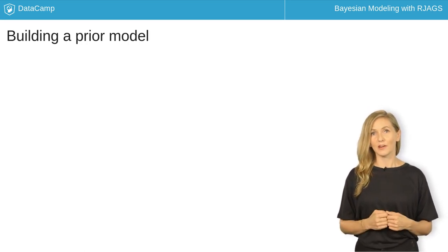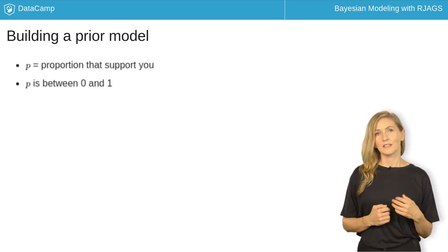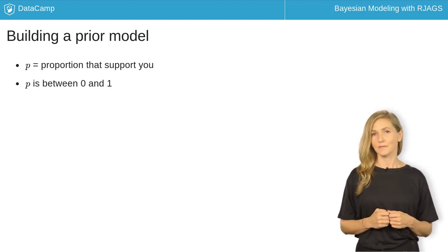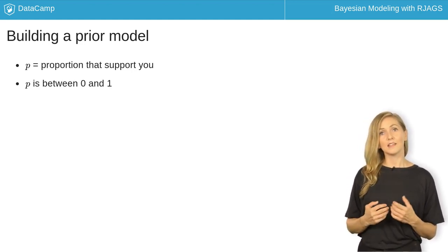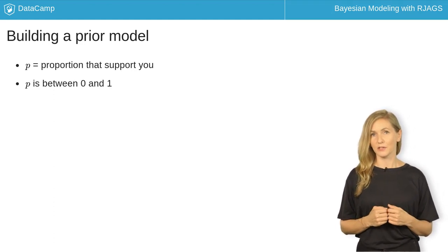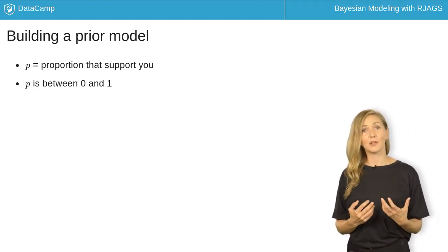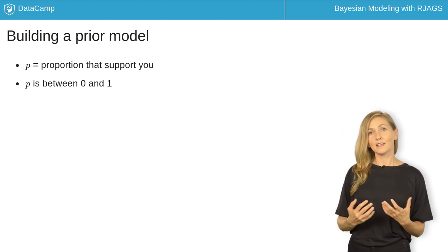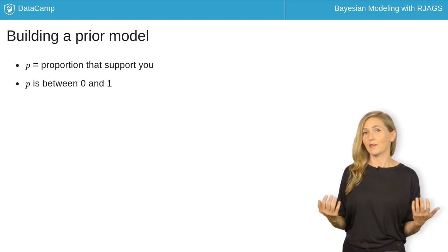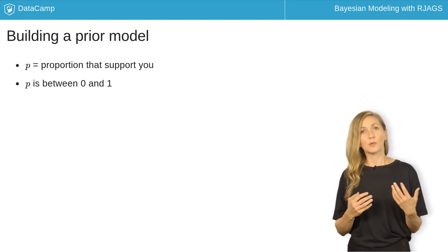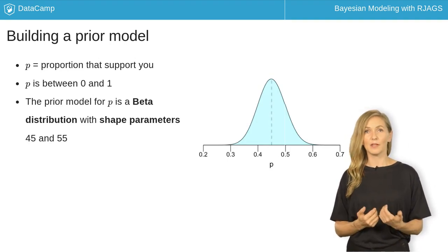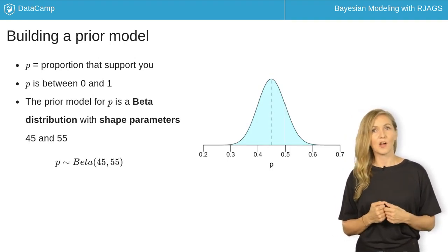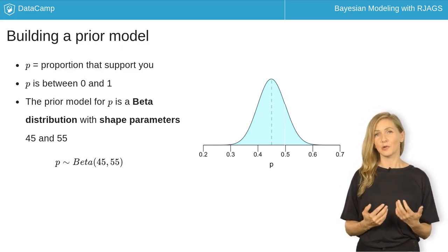Let's start with the prior. Engineering and communicating a prior model requires some notation. Let p denote the proportion of voters that support you. Thus, p is a value between 0 and 1. In a Bayesian analysis, we treat parameter p as a random variable. Thus, the prior model of p is simply a probability distribution. The beta distribution, which also lives on 0 to 1, is a natural choice here.